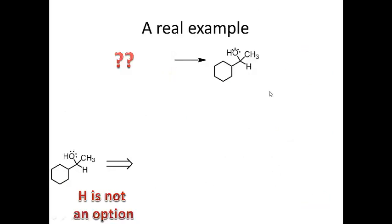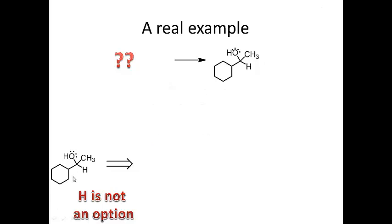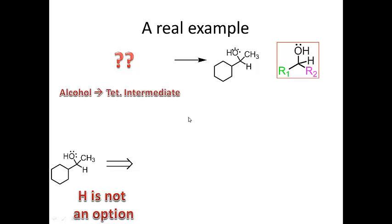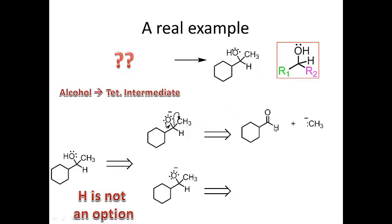Let's look at a real example. I have a secondary alcohol. As a rule of thumb, if you have a secondary alcohol and you're asked to derive the Grignard and the starting carbonyl, one of your starting materials is going to be an aldehyde. Starting from the alcohol, I cannot remove H or OH — I can only eliminate CH3 or the cyclohexane ring. Going from the alcohol to the tetrahedral intermediate, if I eliminate CH3, I reform the pi bond and kick off CH3 with a pair of electrons, giving this aldehyde.